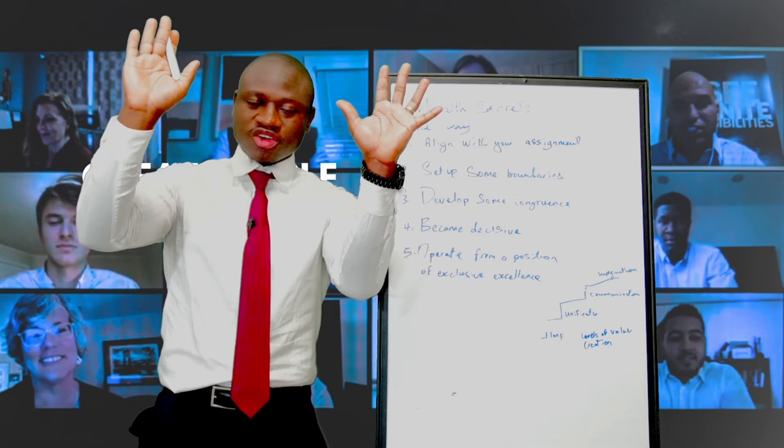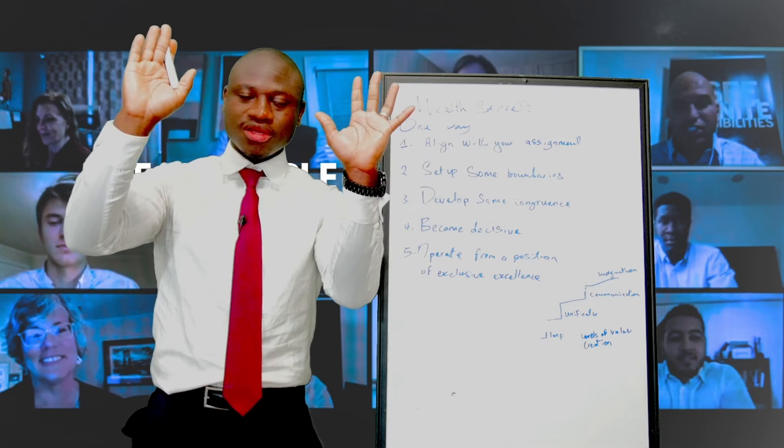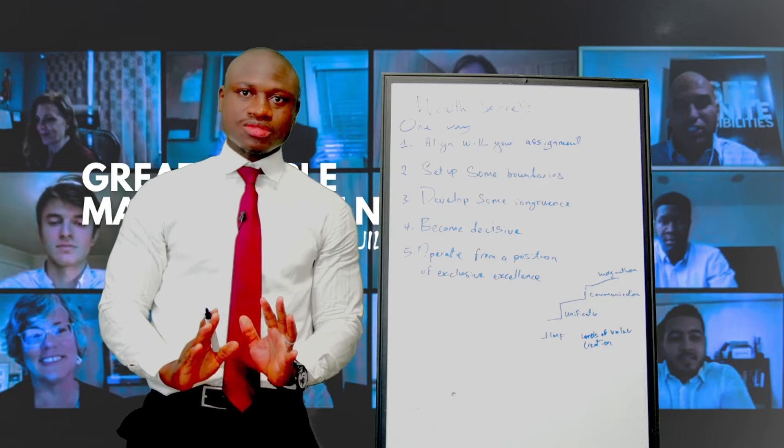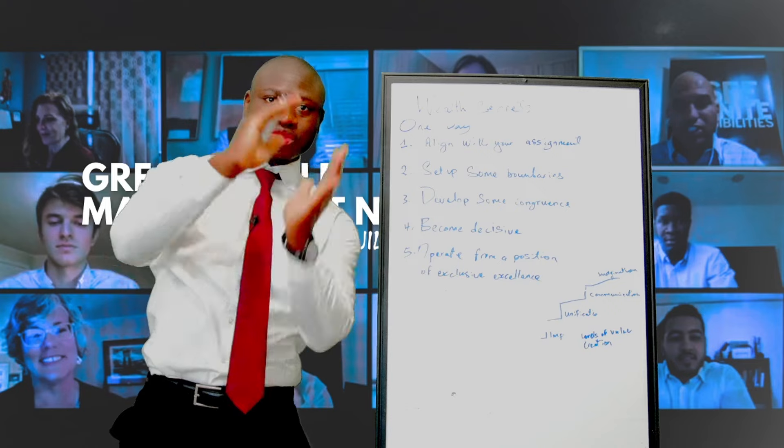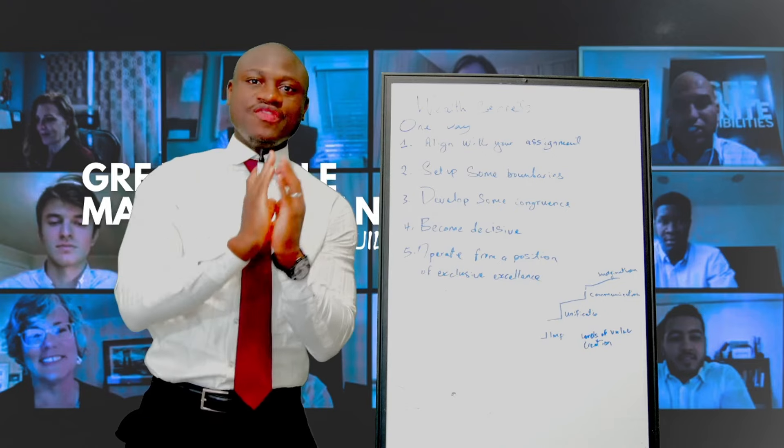Grab two sheets of paper and a pen. Look for a quiet and comfortable place and sit down. On one sheet of paper, write down all the obstacles that you think will stand on your way towards achieving your dreams.